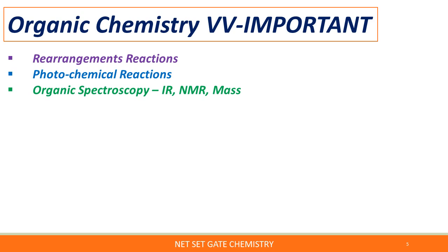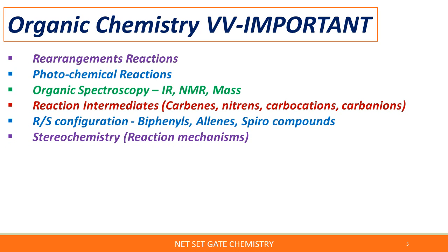You have to focus on how photochemical reactions are carried out, particularly the Barton reaction. Then in organic spectroscopy, you have to solve numerical problems based on IR, NMR, and mass spectroscopy. For reaction mechanisms and reaction intermediates, you need to cover carbenes, nitrenes, carbocations, carbanions, and arynes.